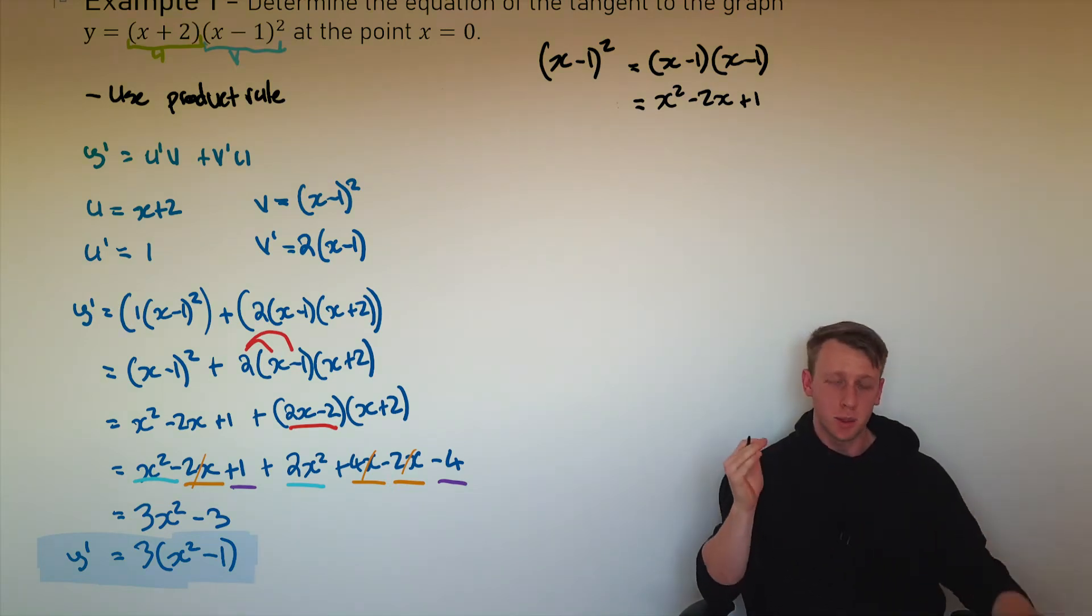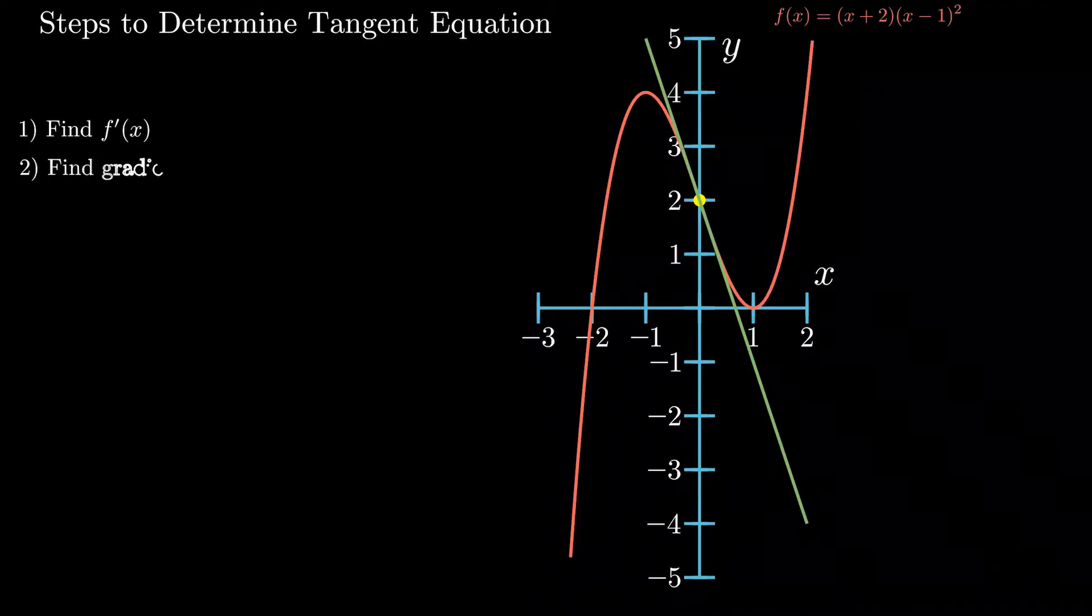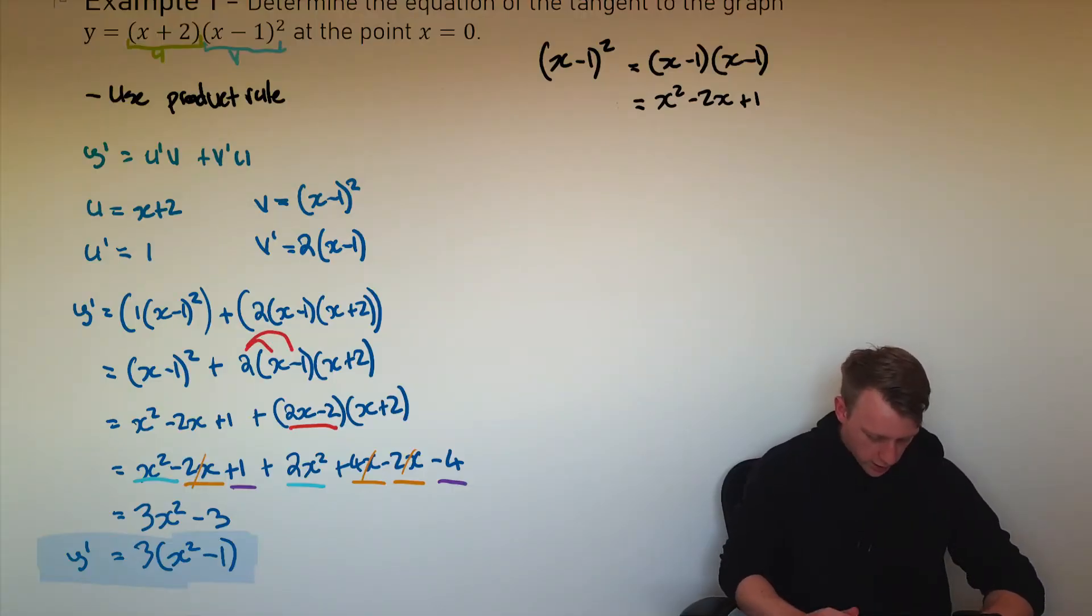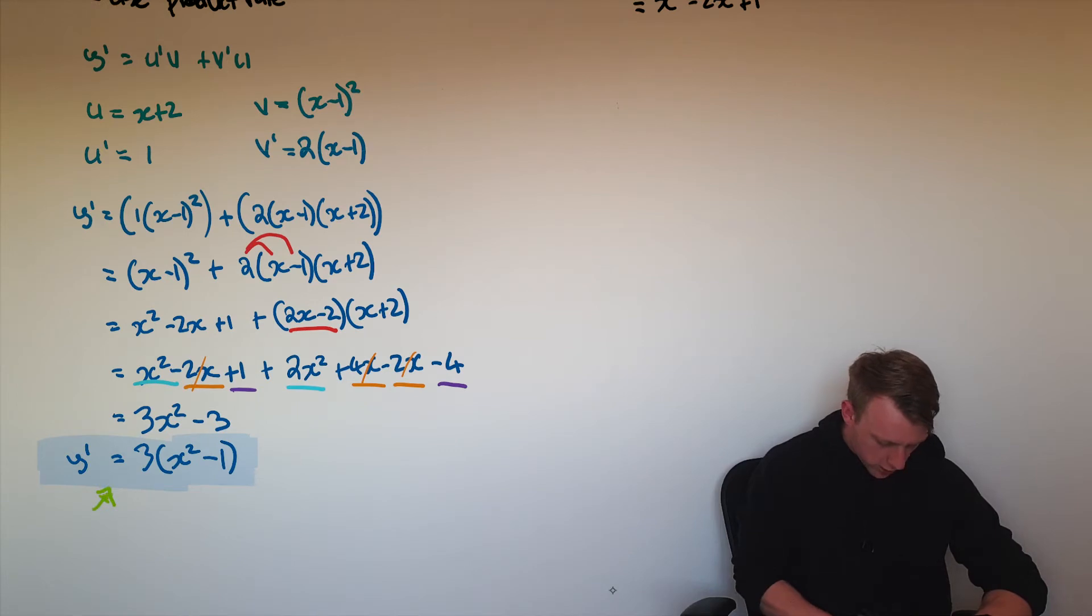Step number two is to find out the gradient of this tangent line. And we remember that corresponding y values on the derivative function are going to tell me the gradient of the original function. So that means I evaluate this function at x equals 0. That's going to tell me what m is equal to.